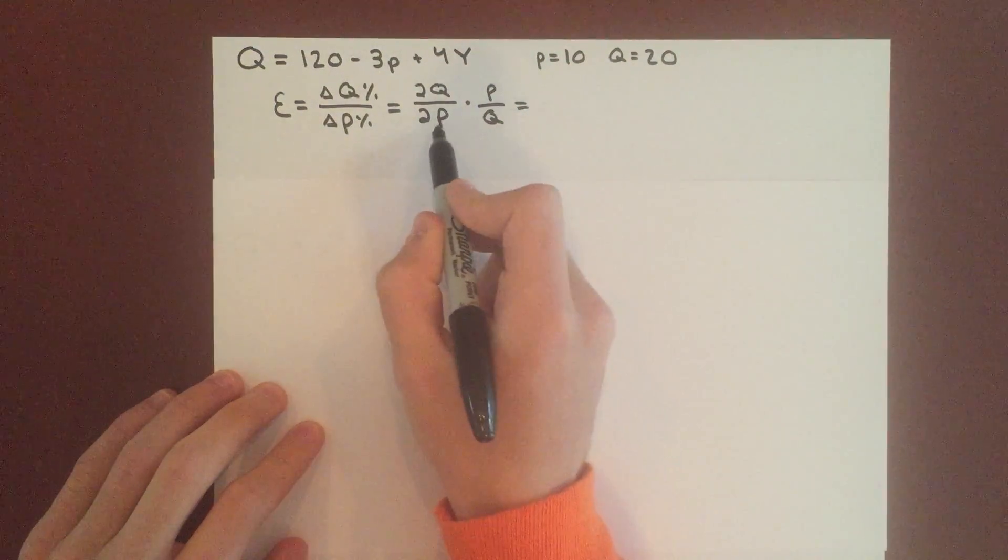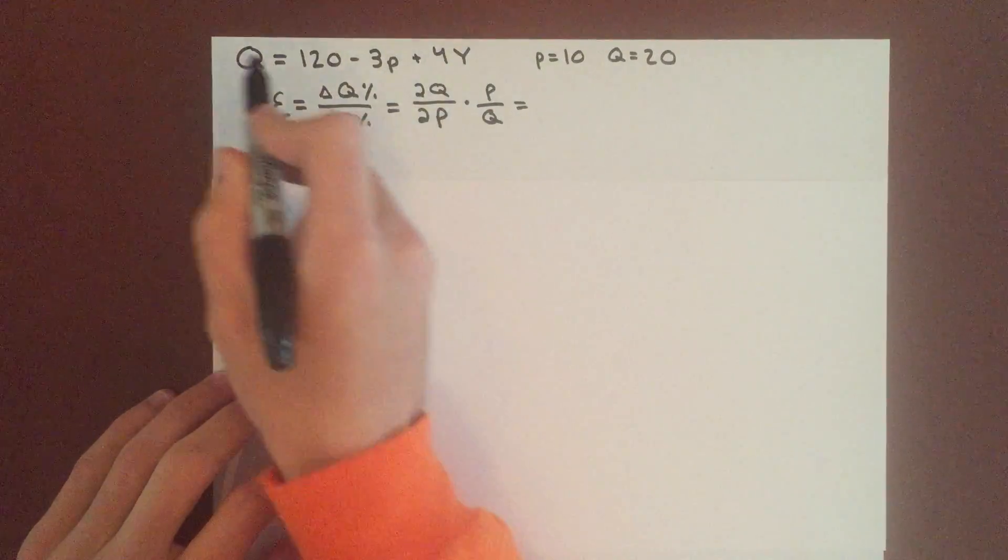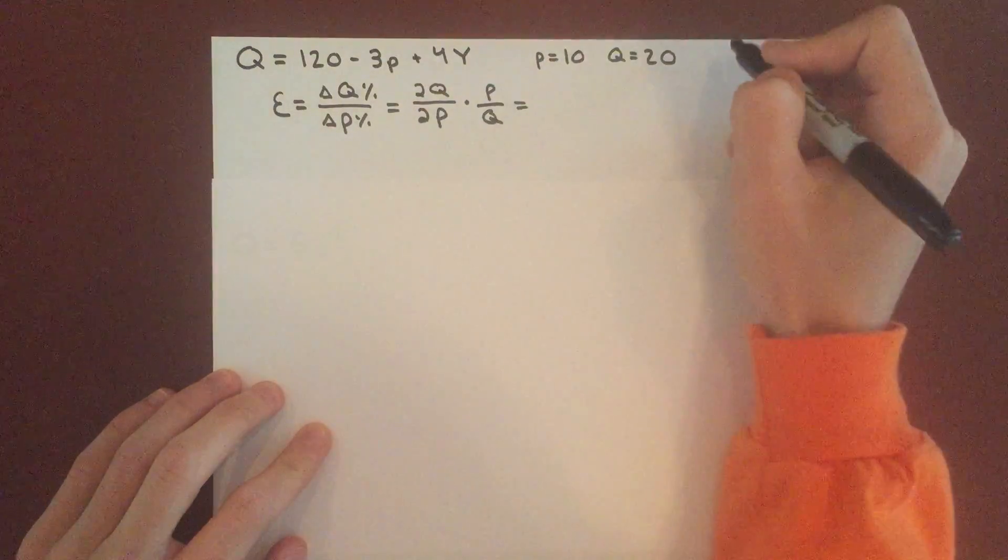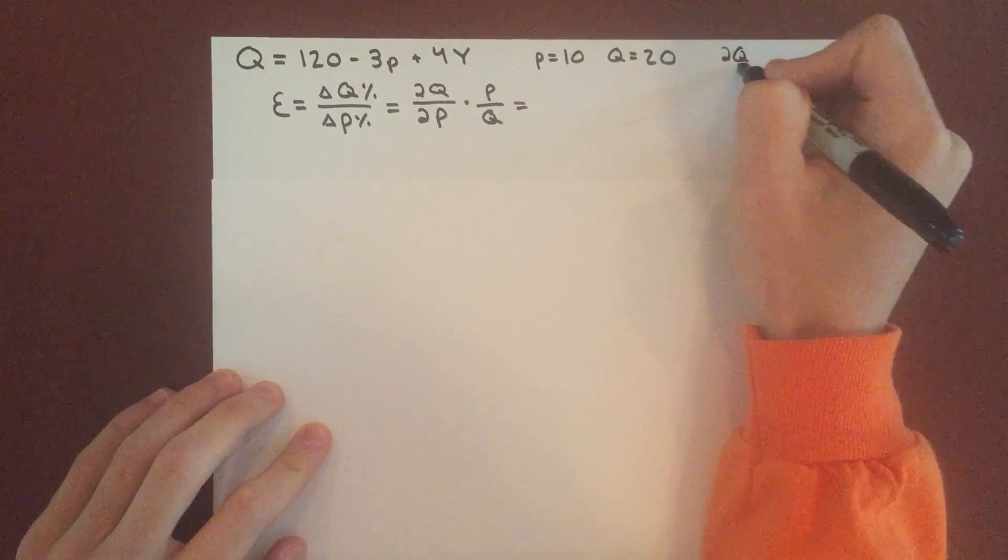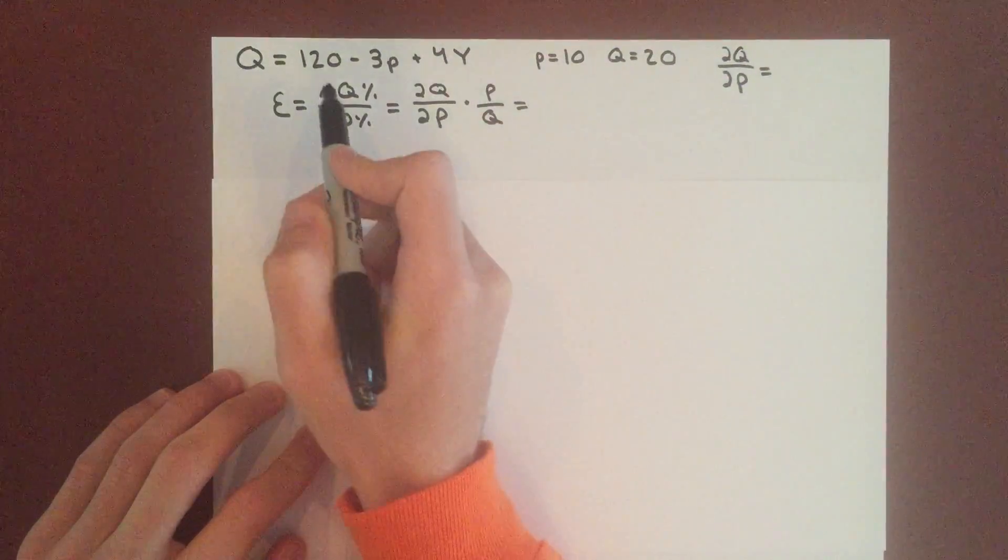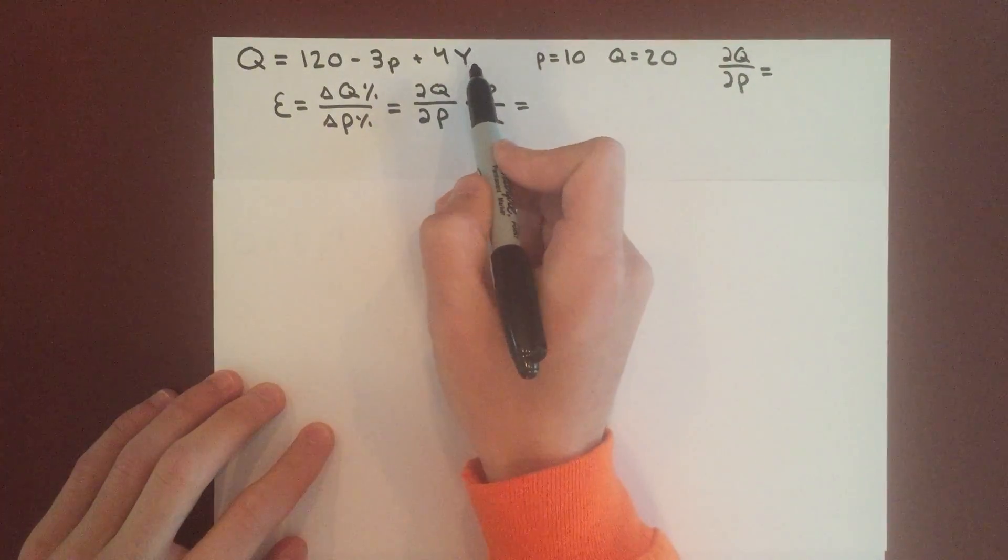we can solve for this using the derivative of this demand function. So let's take this partial derivative. Derivative of quantity with respect to price is really simple because remember partial derivatives, so we take this Y as a